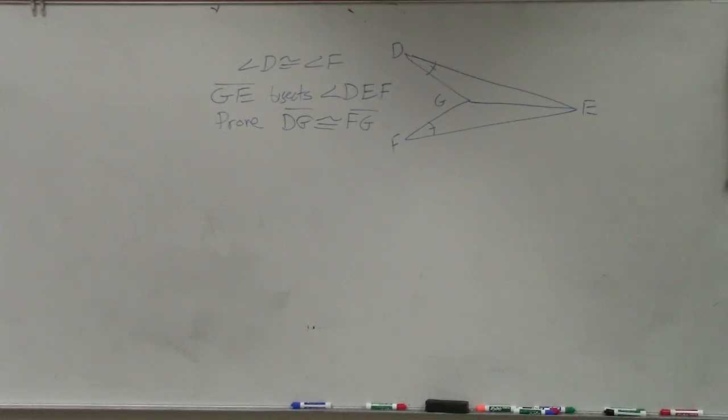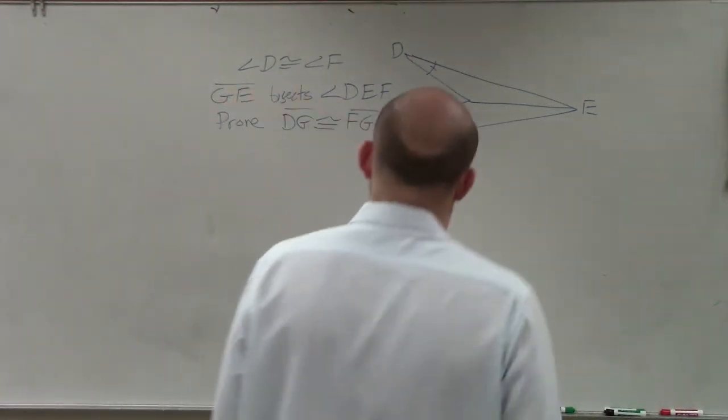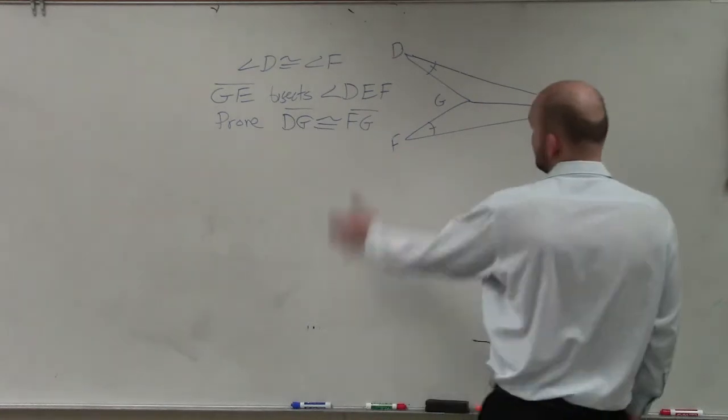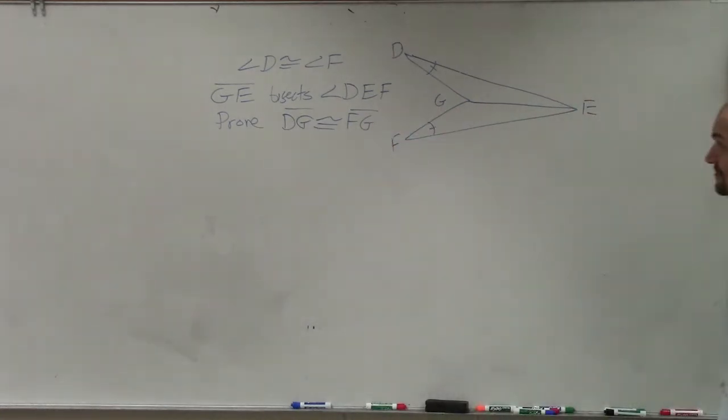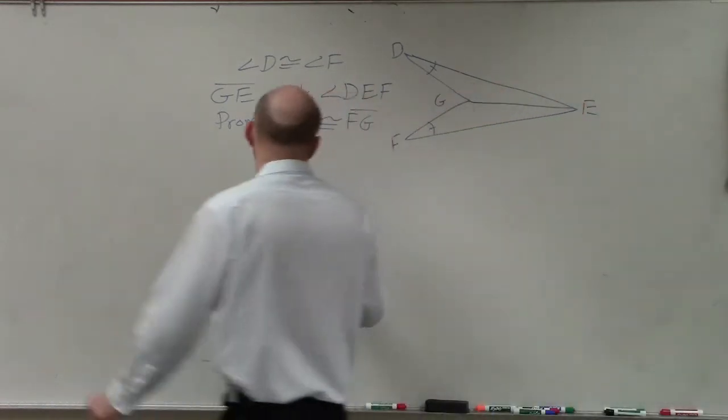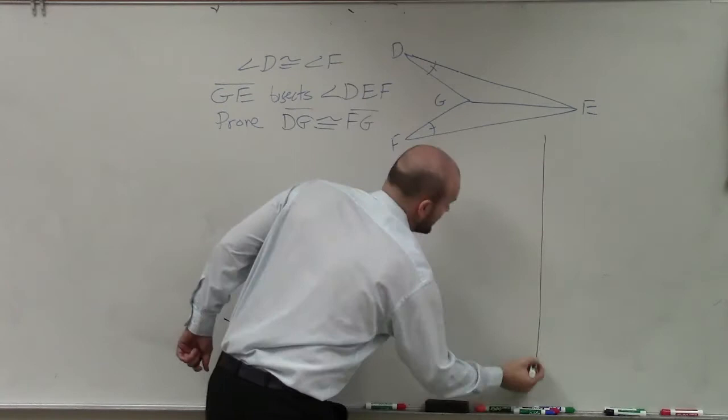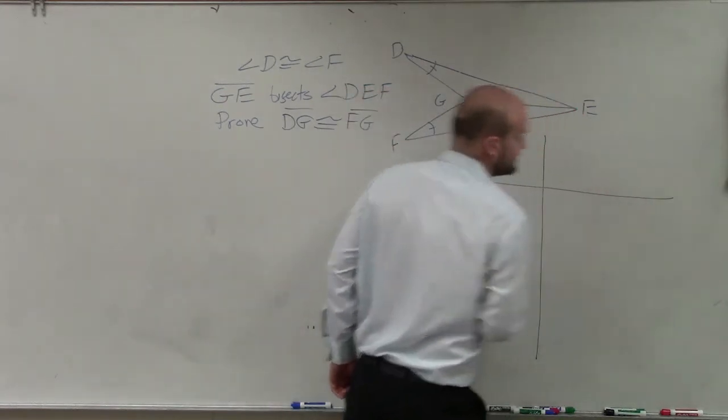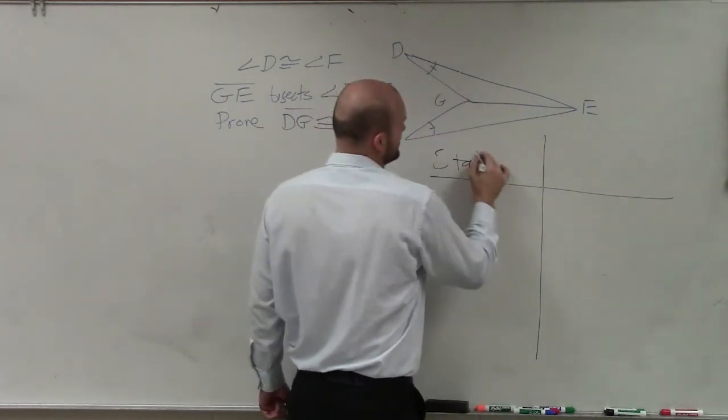Okay, so let's go over this proof here real quick. What we have here is angle D is congruent to angle F. GE bisects angle DEF. Now, what's really important before we even get to our proof, let's just write down the stuff that we know. Before we even start thinking, let's write the stuff we know.